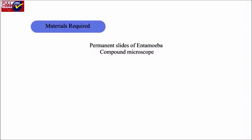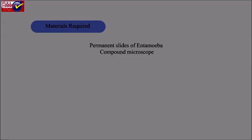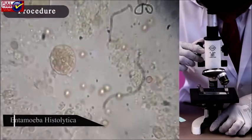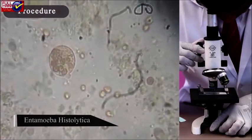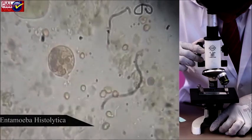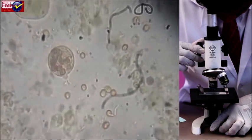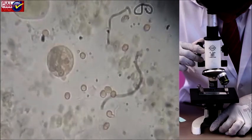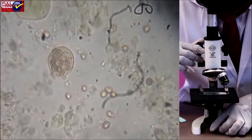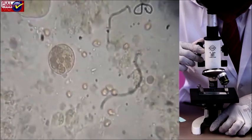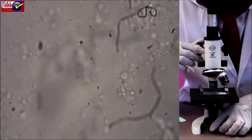Materials required: Permanent slides of Entamoeba, compound microscope. Procedure: Entamoeba is an intestinal parasite in humans and causes amoebic dysentery. Observe the permanent slide of Entamoeba under compound microscope. Note down the characteristics of the organism in the practical record book.